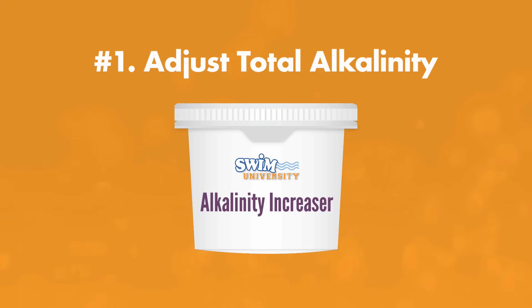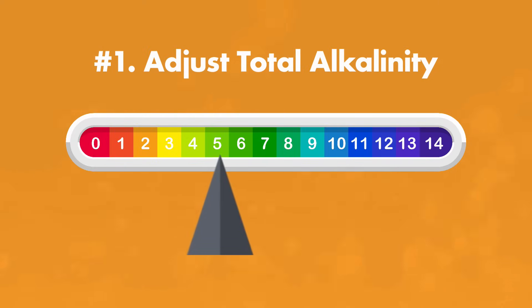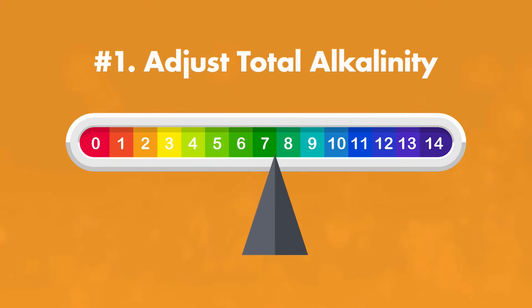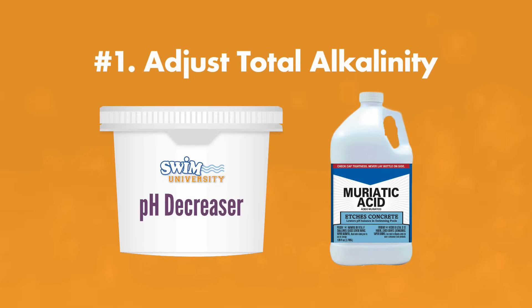First, adjust your total alkalinity. Alkalinity helps prevent fluctuations with pH, so adjusting your alkalinity first can help bring your pH into range. If you need to raise your alkalinity, you can use an Alkalinity Increaser or baking soda. If you need to lower your alkalinity, you can use pH Decreaser or muriatic acid.